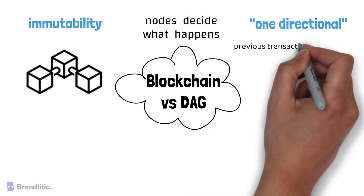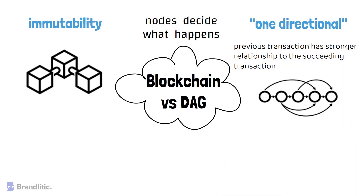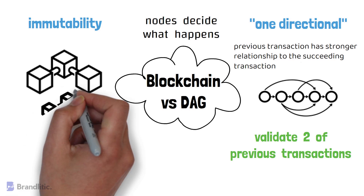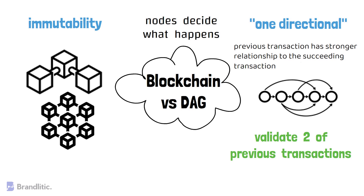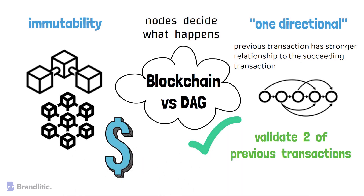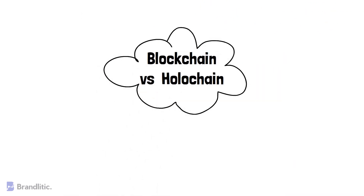Under DAG, the previous transaction has a stronger relationship and influence on succeeding transactions. For a transaction to succeed in a DAG network, it only has to validate two previous transactions — ensuring they contain no conflicting information. This differs greatly from blockchain, where a transaction must validate numerous previous ones. As blockchain blocks multiply, computation becomes increasingly difficult and mining becomes power-intensive and expensive. DAG transactions remain efficient even as network volume builds up.